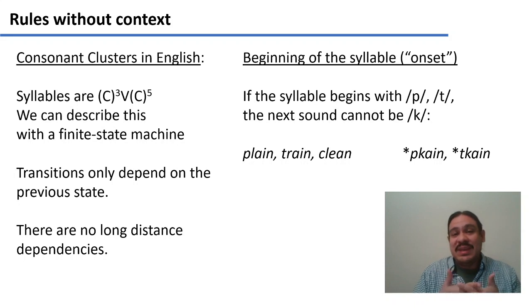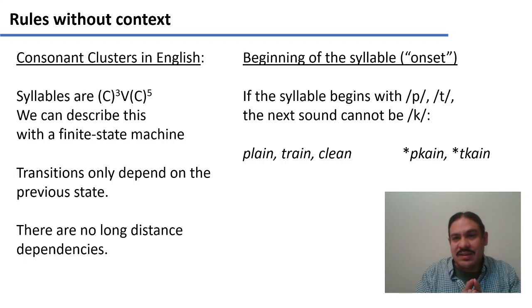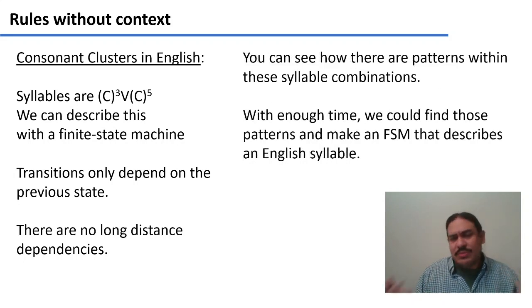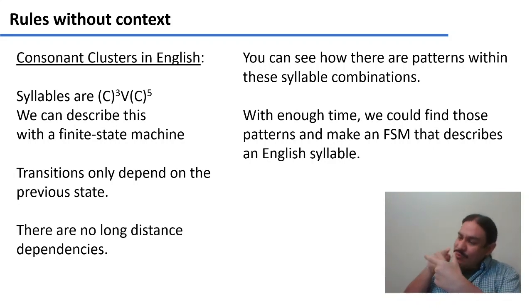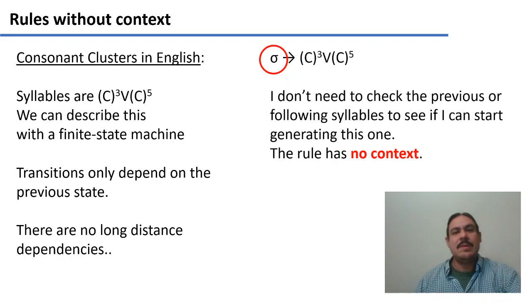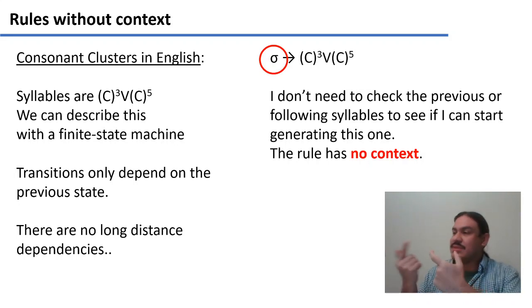Similarly, if a syllable begins with P or T, you can have many next sounds such as L and R, but you cannot have K as the following sound. So you can have 'plain,' 'train,' and 'clean,' but not 'pkane' or 'tkane.' With enough time, you could create a finite state machine that describes all of an English syllable. You would have all the information you need right there within the syllable — you wouldn't need to look at the following or previous syllable. This is a rule that does not have context.